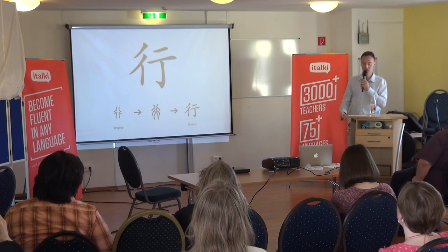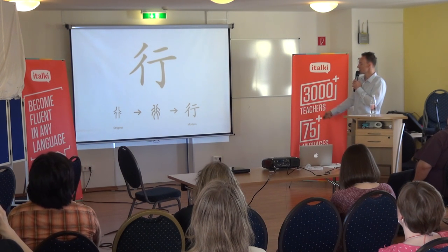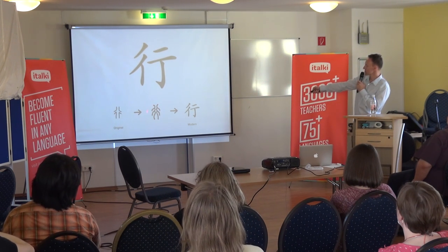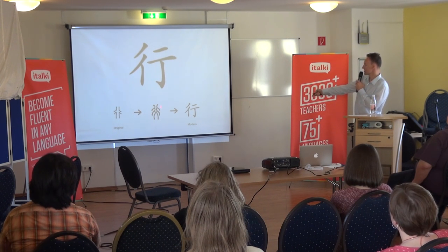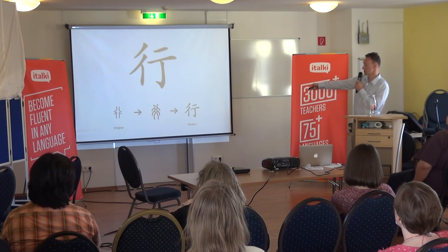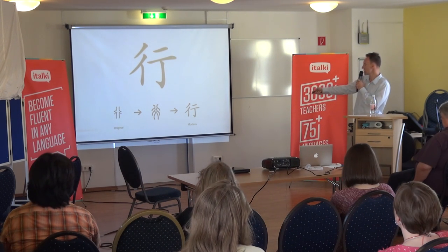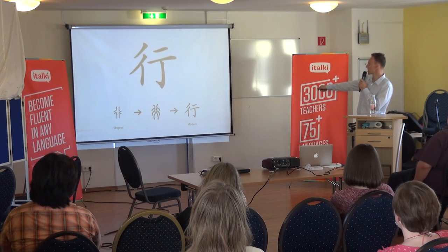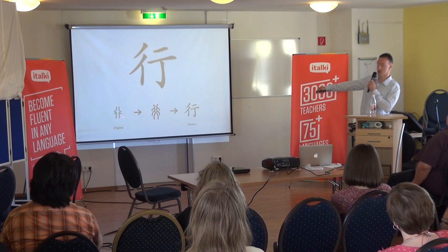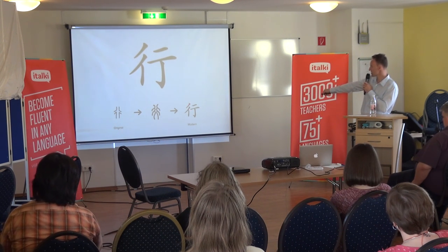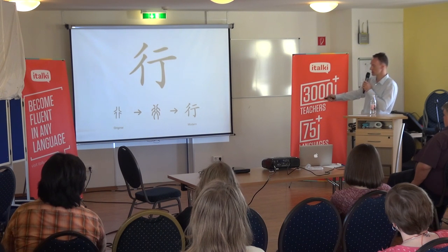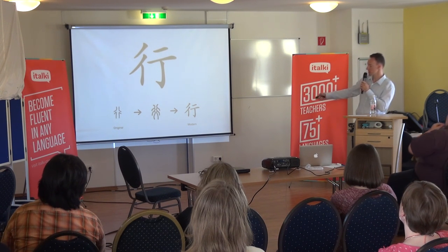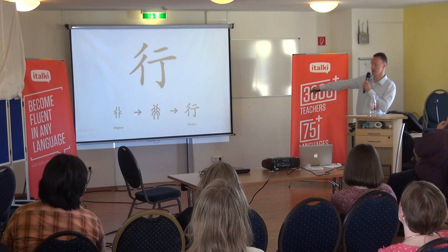This character means 'to go' — originally it meant a crossroad, and you can see that: a road with two connecting roads. It got fancier in the seal script, which was the Qin Shi Huang standardization adopted around 200 BCE. Then formatting changed it further. The left part has a meaning, and the right part has a sound. I don't want to go into full depth, but it is based on the shape of that crossroad.